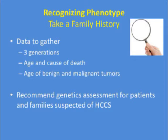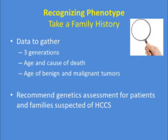Recognizing the phenotype requires taking a family history. The recommendations are to gather data from three generations, determine the age and cause of death in relatives — because if parents died in their 40s, you may not have an informative family history. Document the age of both benign and malignant tumors, and if the family history seems suspicious, send that person for a genetics assessment.